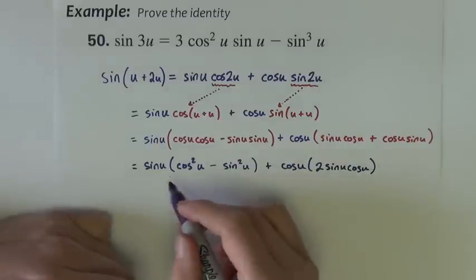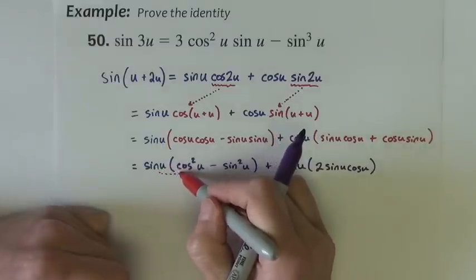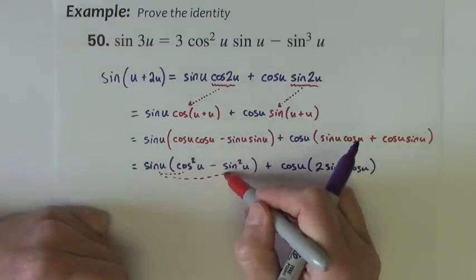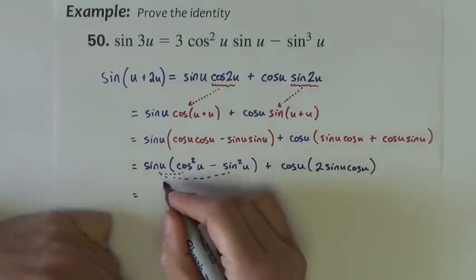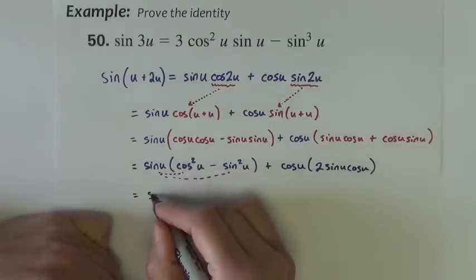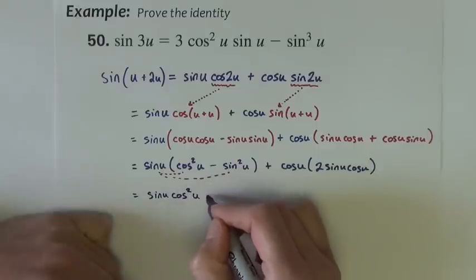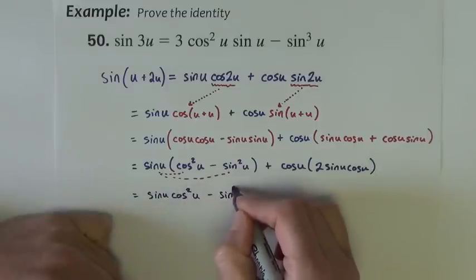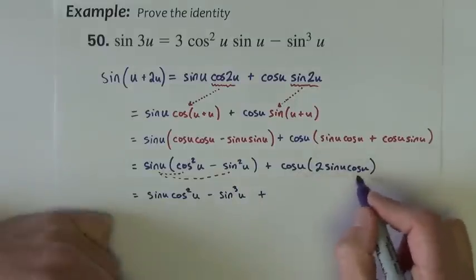Alright, let's do a distributive property here, giving me sine u, cosine squared u, minus, sine cubed u, plus,